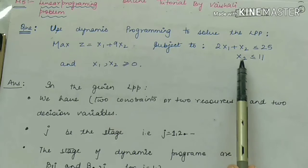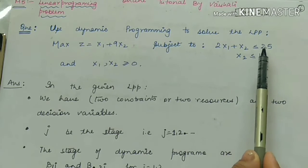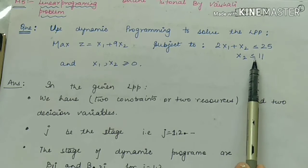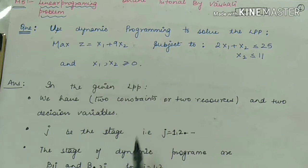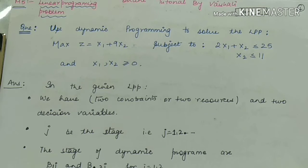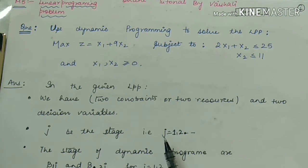As I have explained in my previous videos, in case of dynamic programming we have to do it in two steps. First, we have to create a functional equation for each stage, and then we have to check for the optimality solution of the decision variables. We have to follow the same steps here.